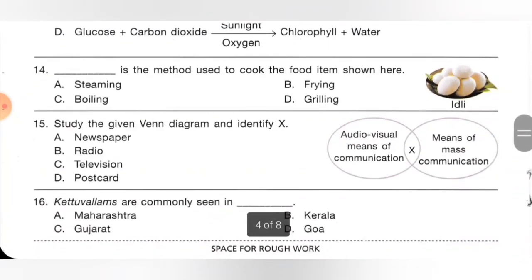Fourteenth one: what is the method used to cook the food item shown here? The given food item is idli. Option A: steaming, B: frying, C: boiling, D: grilling. Steaming is the method used to cook idli. Option A is the correct answer.